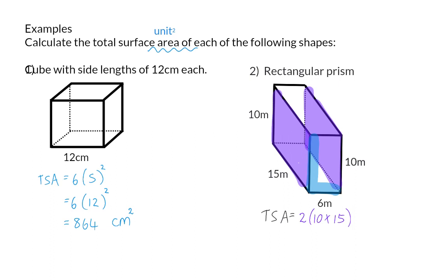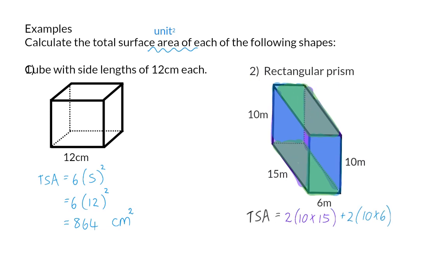Next up, at the front and at the back, we have two more identical rectangles of 6 by 10. So for them, the area will be two 6 by 10 rectangles. And finally, at the bottom, we have a rectangle of 15 by 6 meters, which is repeated at the top. So the last part to add up will be two 15 by 6 rectangles. This will give us a total surface area of 600 meters squared.